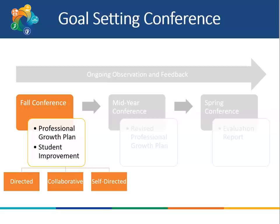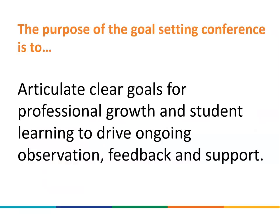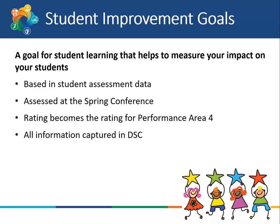Teacher growth and development begins with reflecting on current practice and setting goals to drive future action. The Delaware Teacher Growth and Support System begins with the creation of Professional Growth Goals and Student Improvement Goals. These goals and plans are created at the Fall Goal Setting Conference. The purpose of the conference is to articulate clear goals for professional growth and student learning to drive ongoing observation, feedback, and support. Every teacher will set student improvement goals — a goal for student learning that helps to measure the teacher's impact on their students. Student improvement goals are based in student assessment data and assessed at the spring conference. The rating on the student improvement goal becomes the rating for performance area 4.